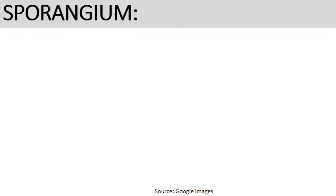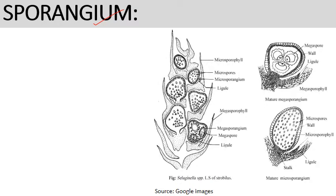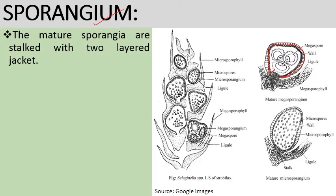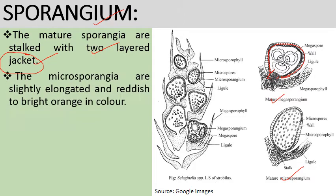If we talk about the sporangium structure, the strobilus has two types of sporangia: microsporangia and megasporangia. Both consist of an outer two-layer jacket providing protective covering. The mature sporangia have a stalk and a two-layer jacket in both microsporangia and megasporangia.